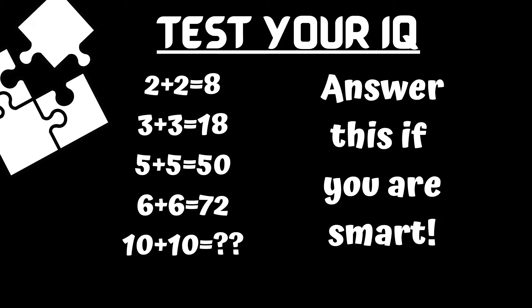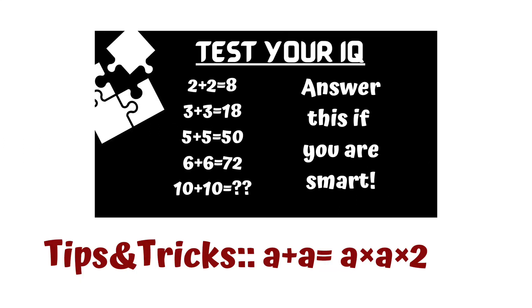Now friends, see the final answer. So first we will see tips and tricks. Apply a plus a equal to a into a into 2. So friends see, the same rule justifies the first row. 2 plus 2 equal to 8, apply 2 into 2 into 2, this is the value of 8.